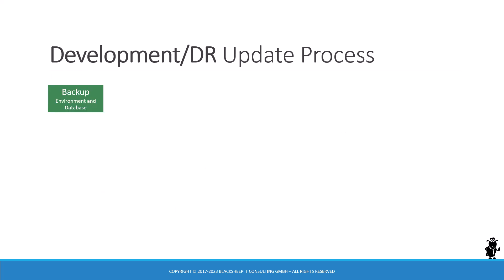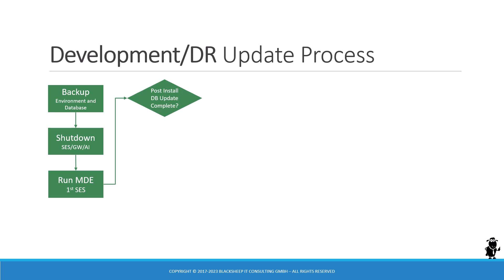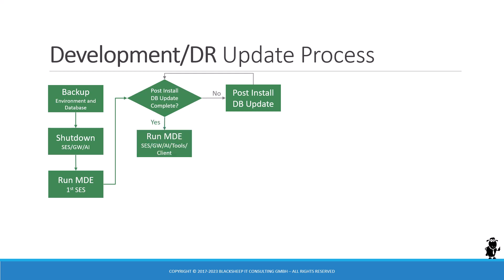Let's look at the development update in greater detail. You start by backing up your environment and database to ensure you have a safe point to return to. Then you shut down the Siebel software — Siebel Server, Gateway, and AI — and run the MDE, typically on the first Siebel Server, since that's also where the post-install database update runs. It has to be run once per database. If it doesn't complete successfully, you rinse and repeat. Then you run the MDE to update any other Siebel software — additional Siebel Servers, Gateways, AIs, and don't forget Siebel Tools, Developer Web Client, or Mobile Web Client. Then it's time to start up that development enterprise and decide if you need a repository upgrade.